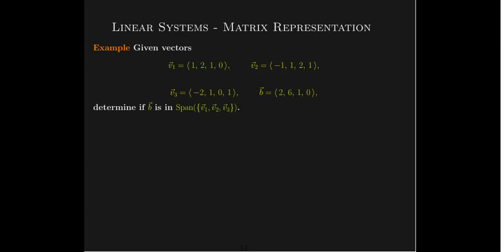So let's see how we can represent a typical linear system using something called a matrix. Here we're given three vectors v1, v2, v3, and a fourth vector b. All of these live in R4. We'd like to know if the vector b is in the span of v1, v2, v3.